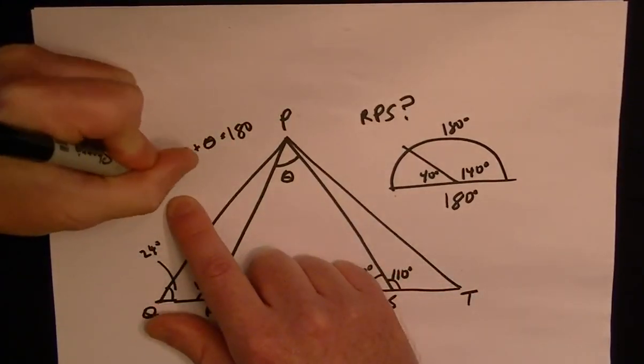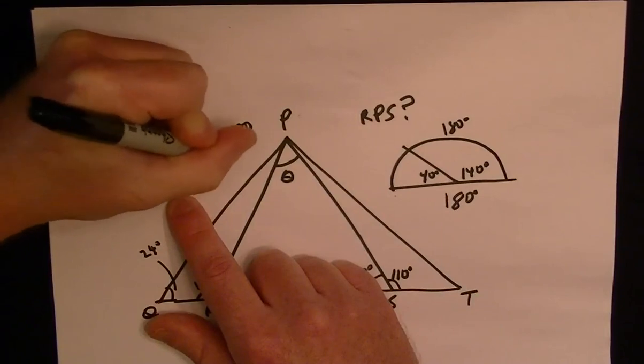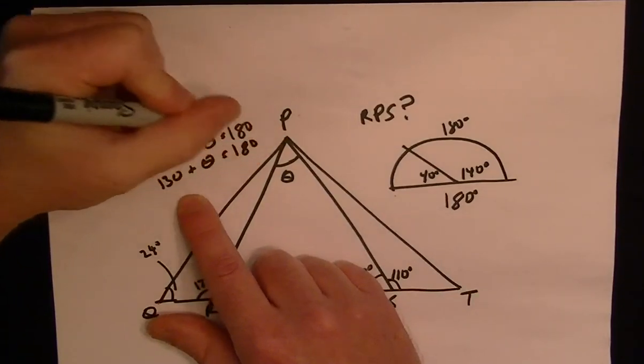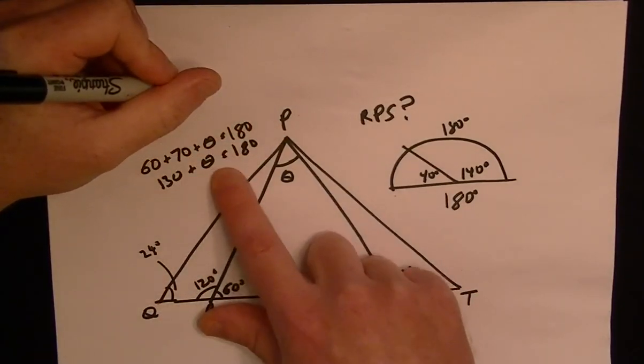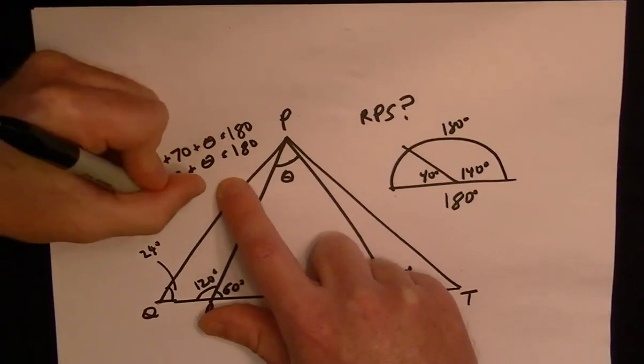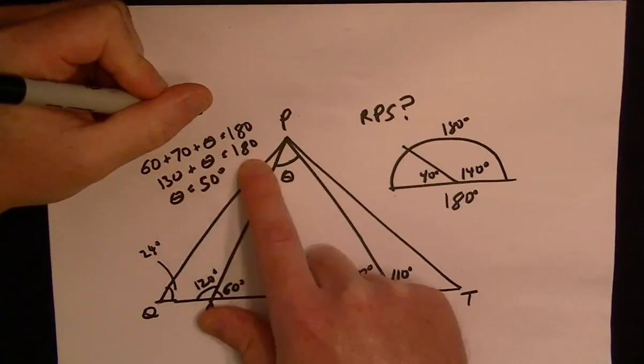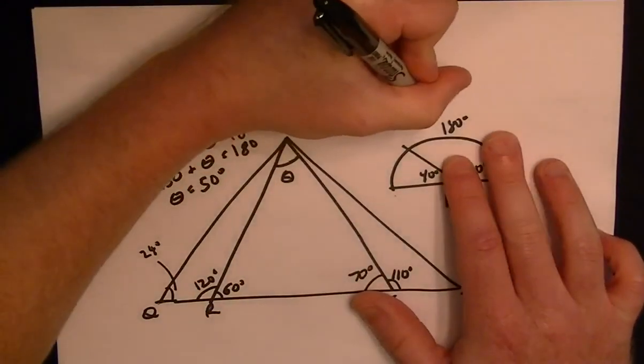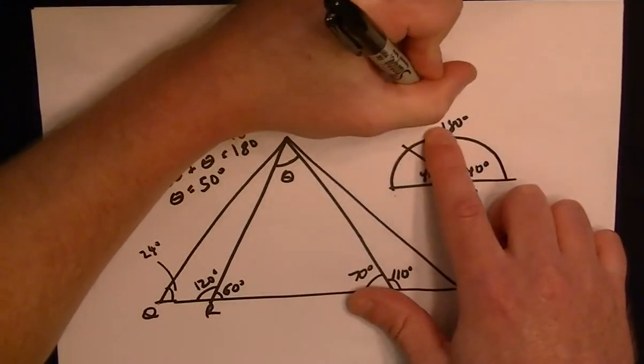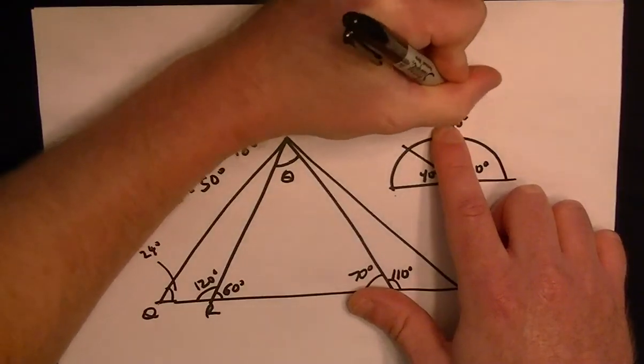So this is going to be 130 plus theta equals 180. So we can see that theta has to equal 50 degrees. So 130 plus 50 equals 180. So the answer to the question is angle RPS is equal to 50 degrees.